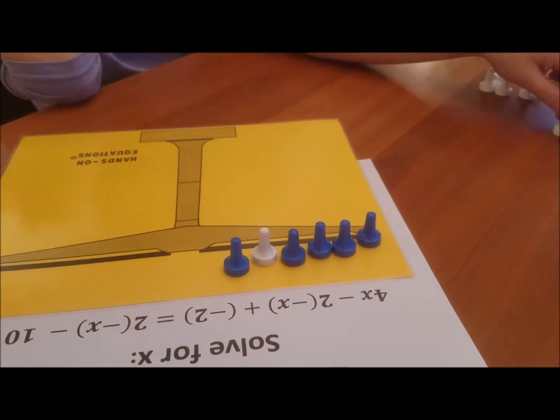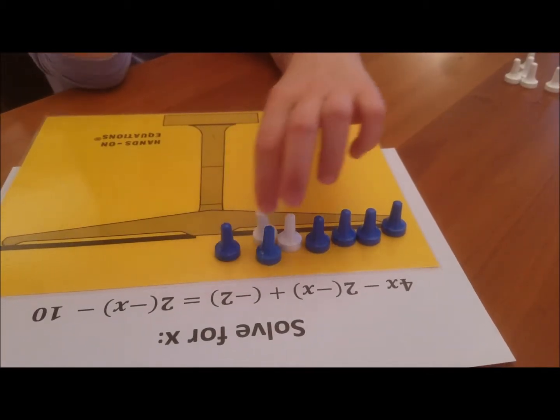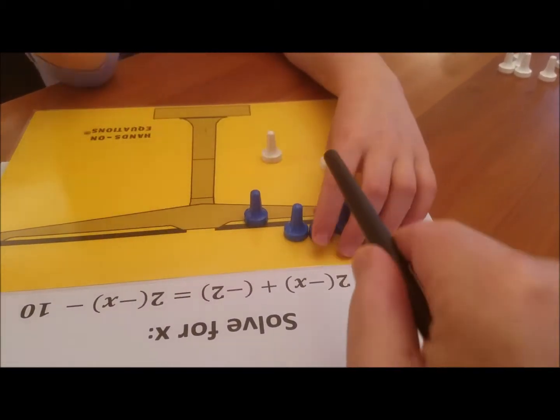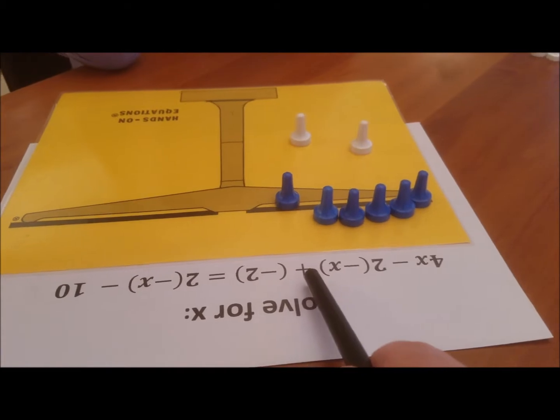You add two zeros of two pairs of opposites, and how does that help? Now you can take away two opposite of x's, there they are. Okay, please continue.